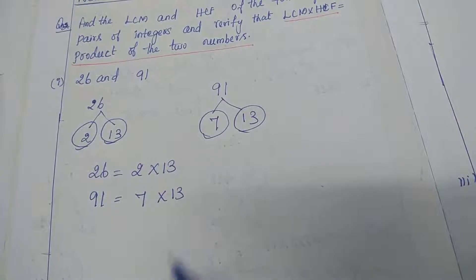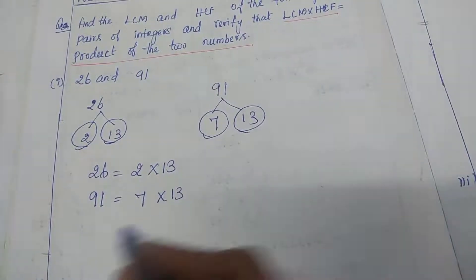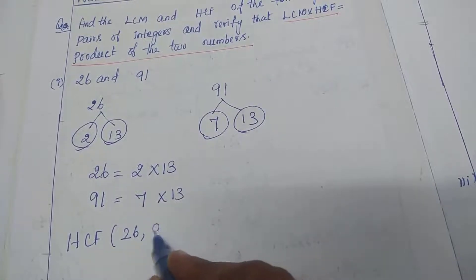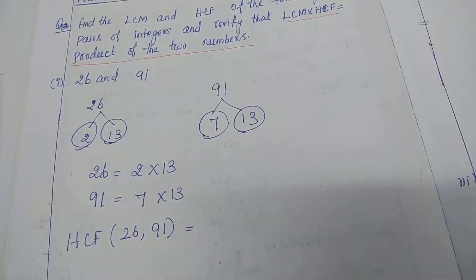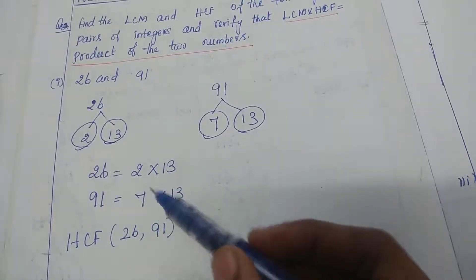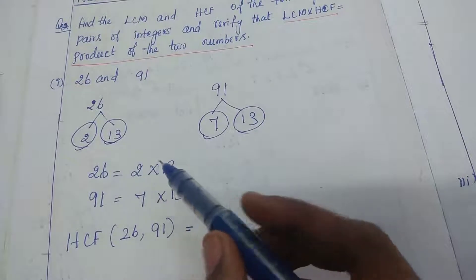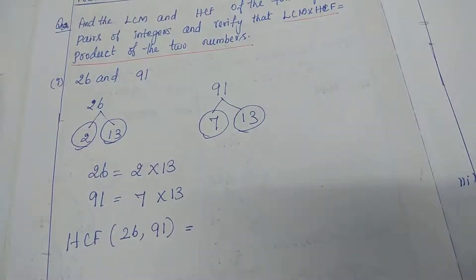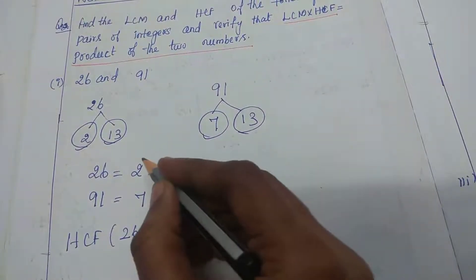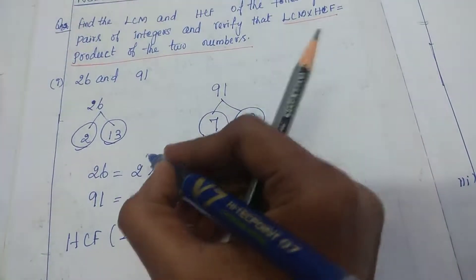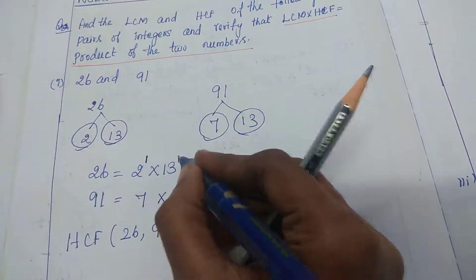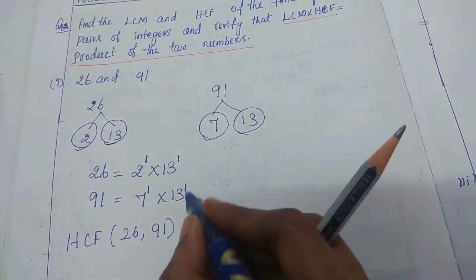For finding the HCF of the given numbers 26 and 91, note the least power of each prime factor. Here we have 2 to the power 1, 13 to the power 1 for 26, and 7 to the power 1, 13 to the power 1 for 91.